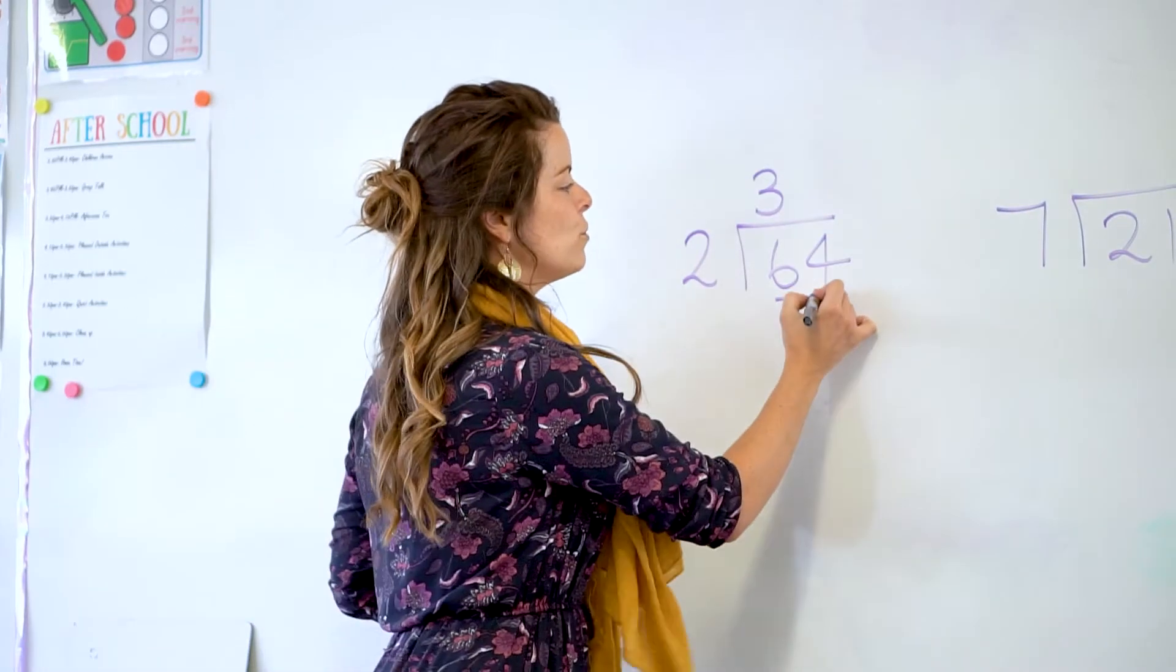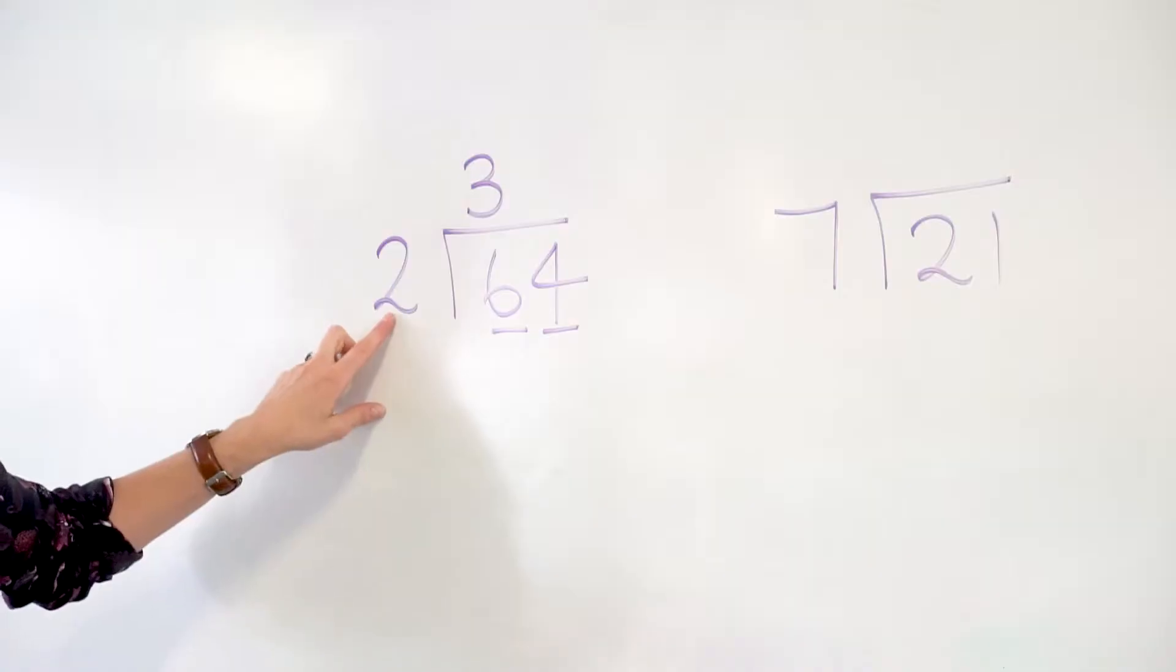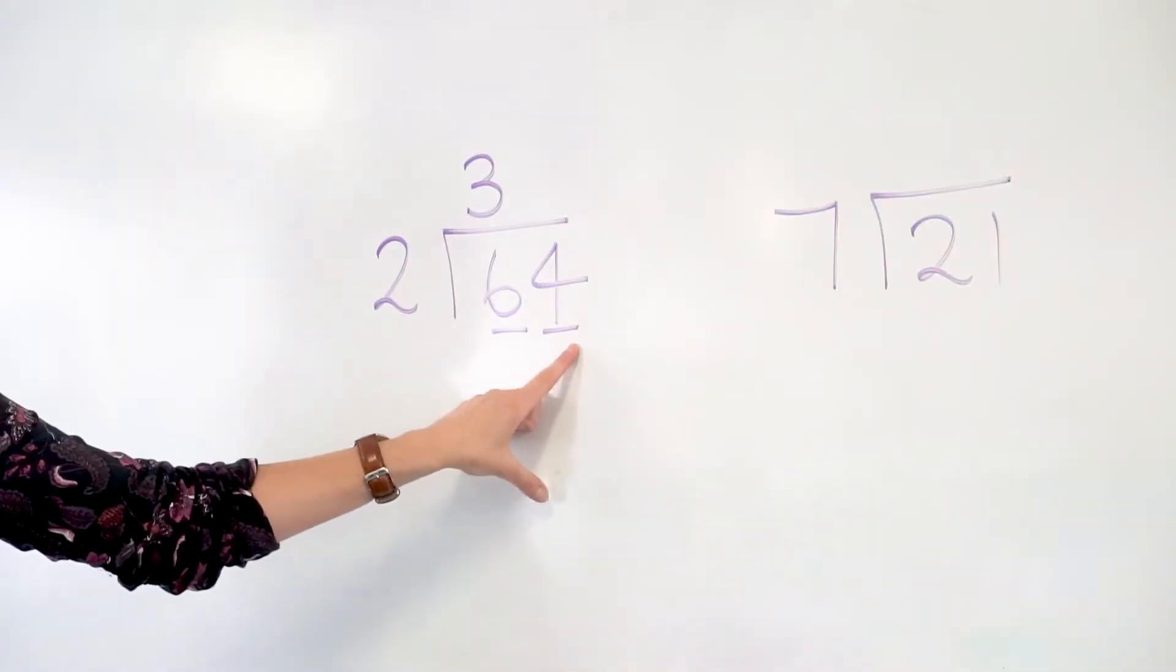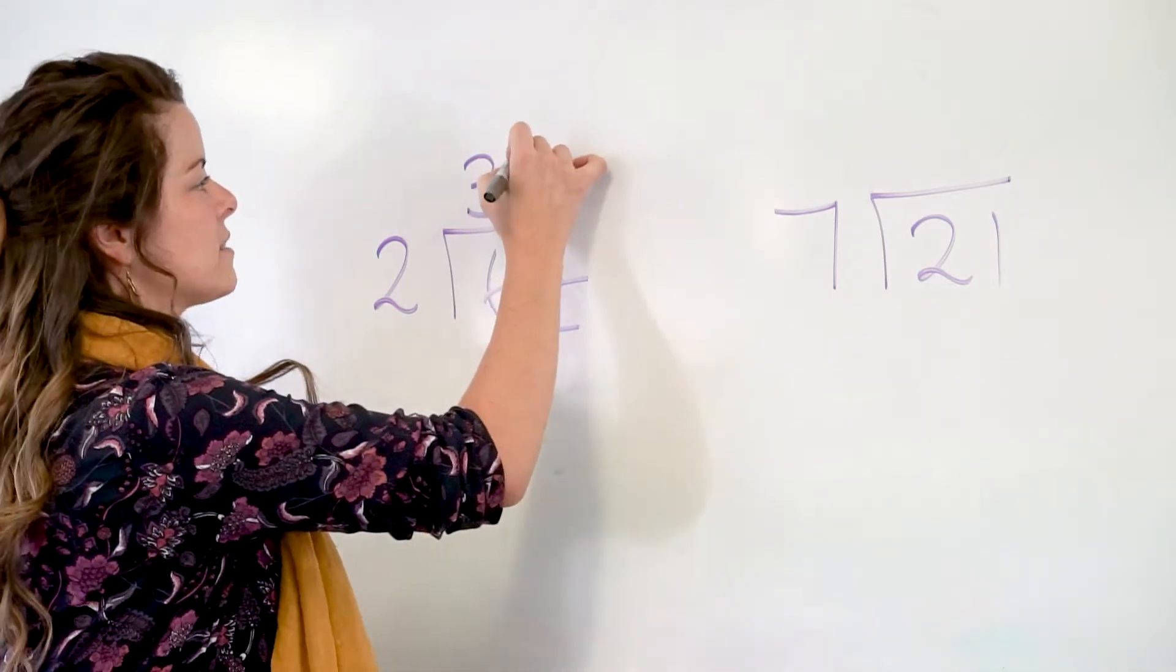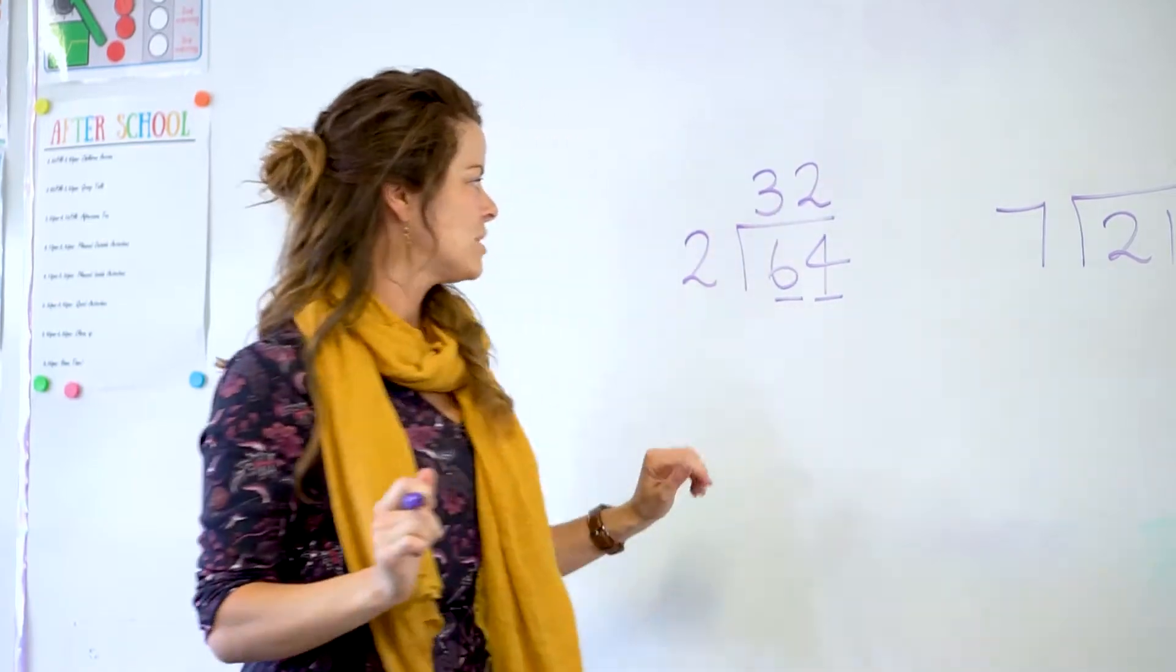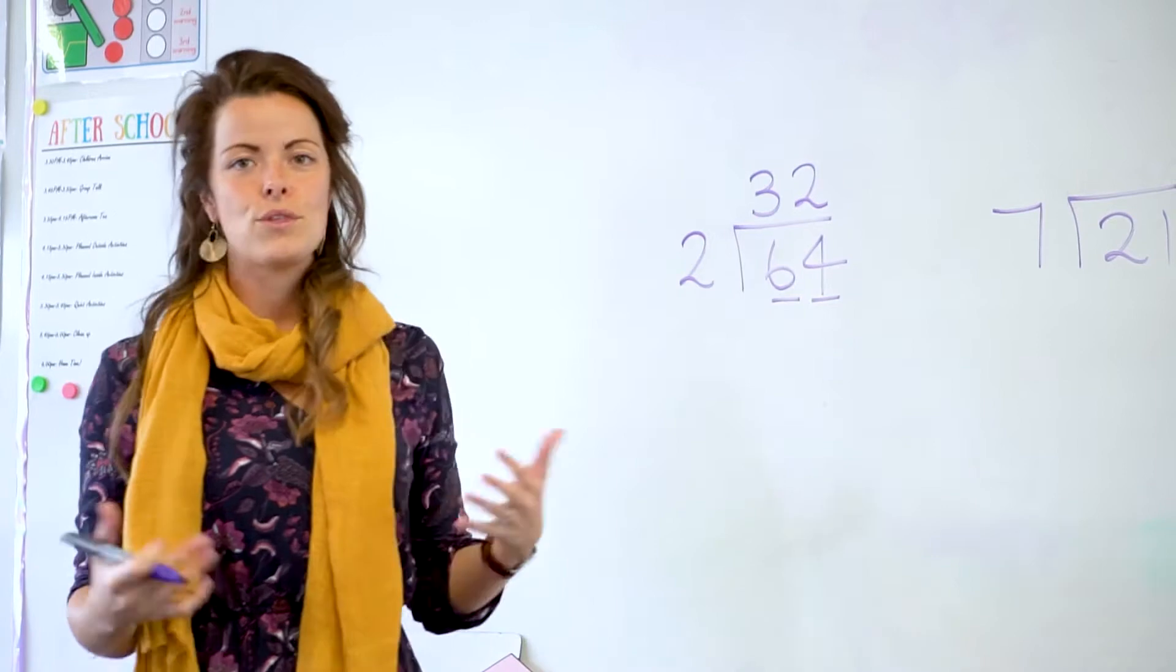Then we move over to the second number and ask the question: how many times does 2 go into 4? That goes in twice. So if you look at how many times does 2 go into 64, it would be 32 times.